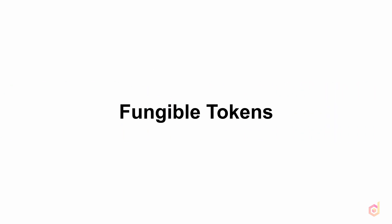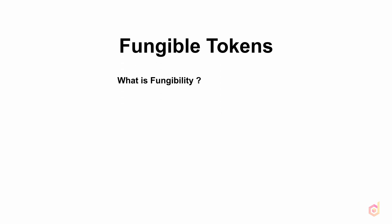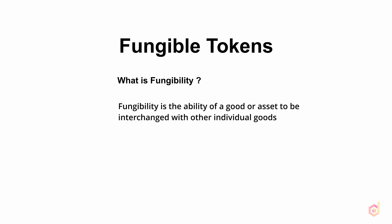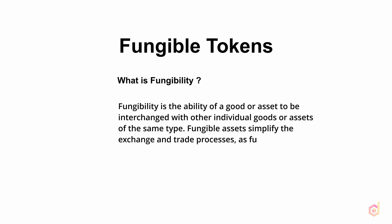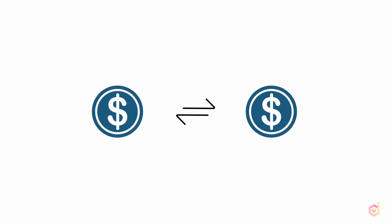Let's start with fungible tokens. So what is fungibility? Fungibility is the ability of a good or asset to be interchanged with other individual goods or assets of the same type. Fungible assets simplify the exchange and trade processes as fungibility implies equal value between the assets. We can interchange fungible tokens with each other and the value will remain the same — it's like interchanging $1 for $1. Both have the same value in the market.